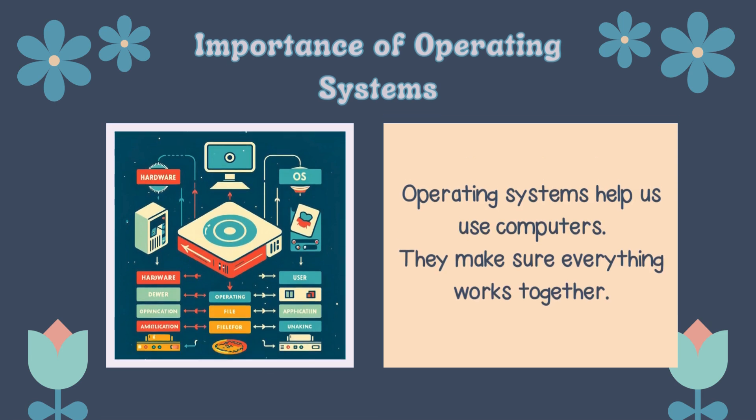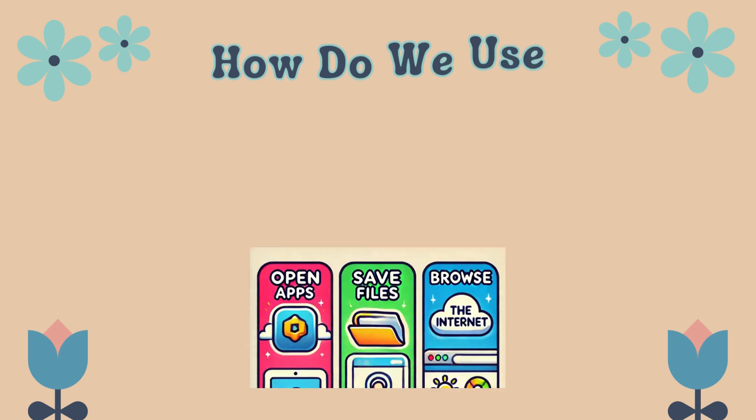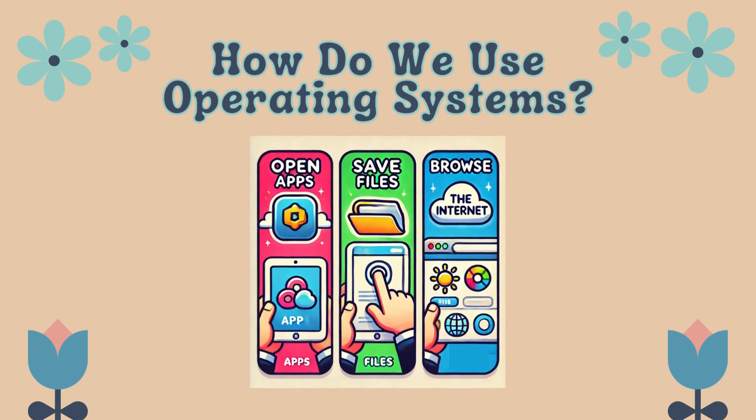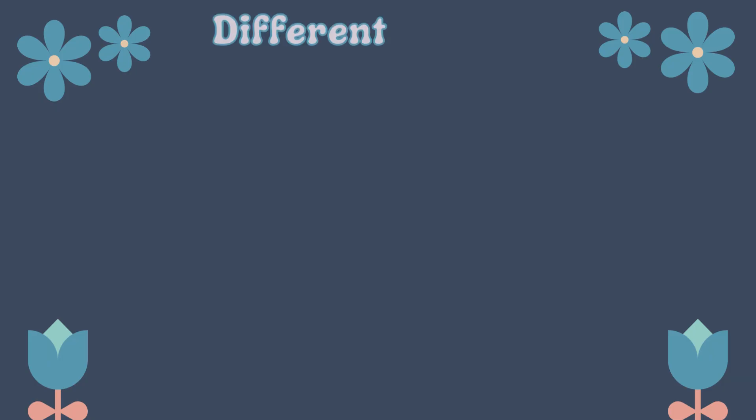Operating systems help us use computers. They make sure everything works together. How do we use operating systems? To open apps, save files, or browse the internet.